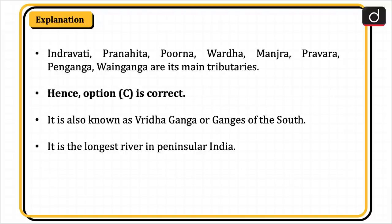Indravati, Pranhita, Purna, Vardha, Manjara, Pravara, Pengana, and Vanganga are its main tributaries. Hence, option C is correct. It is also known as Vridh Ganga or the Ganges of the South. It is the longest river in peninsular India.